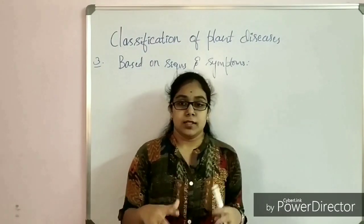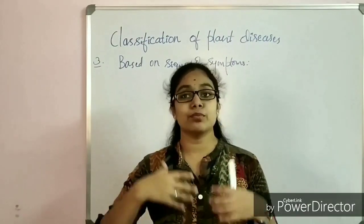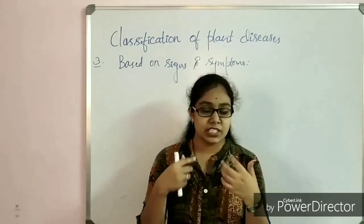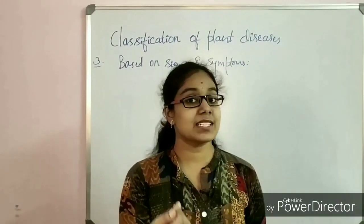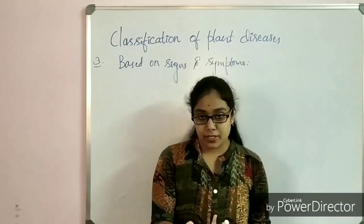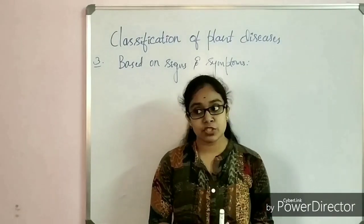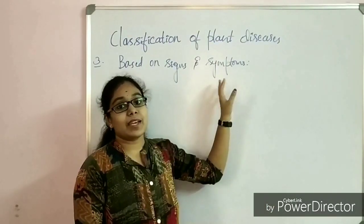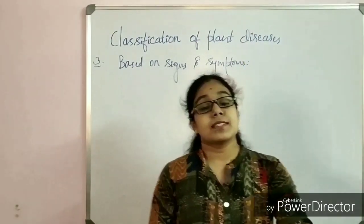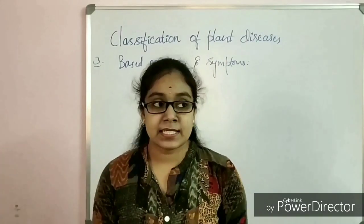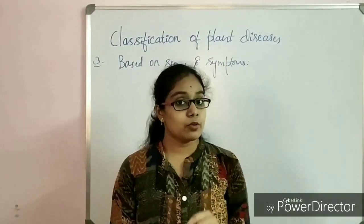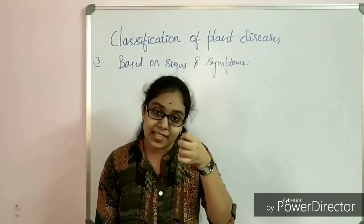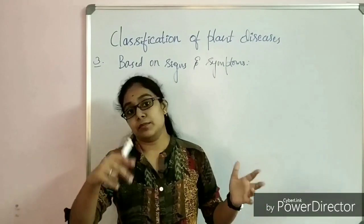When you observe a diseased plant, you come to the conclusion that it is infected by seeing the plant surface — it may be an affected leaf or affected stem — since it shows many symptoms on its surface. Through those signs and symptoms we conclude that the plant is infected. In the same way, we classify diseases based on signs and symptoms into: rust disease, smut disease, powdery mildews, downy mildews, wilt disease, and fruit rot disease.